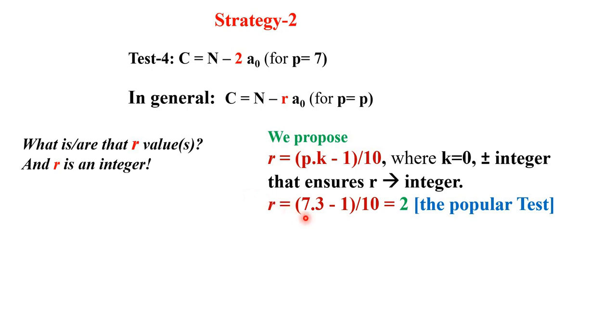That is our prescription. Why this is so, that will come later in a while. For example, your p is 7 and we have used k=3 and that ensures that r is p into 7 minus 1 that is 20 by 10 that is 2. So that gives you the popular test r value here. We have searched that k equals to 3 for p equal to 7 ensures in this formula that r equal to 2 and then we have applied for 791 and dropping 1 from 791 you get 79 and then 2 into a₀ that is 2. So 79 minus 2 is 77 divisible by 7.